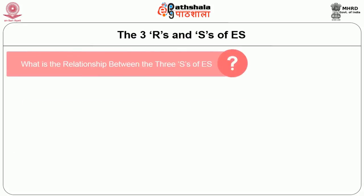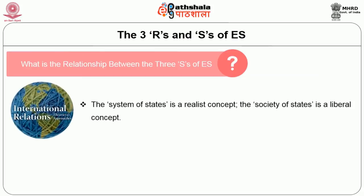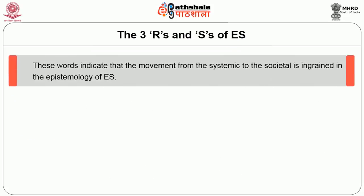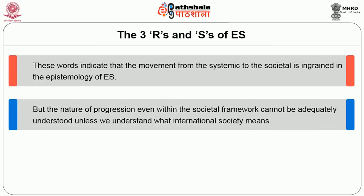But what is the relationship between the three S's of the English school? Jackson and Sorensen helpfully point out that the system of states is a realist concept, while the society of states is a liberal concept. The more international relations constitute a society and the less they merely compose a system is an indication of the extent to which world politics forms a distinctive human civilization with its own norms and values. These words indicate that the movement from the systematic to the societal is ingrained in the epistemology of the English school.